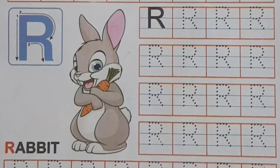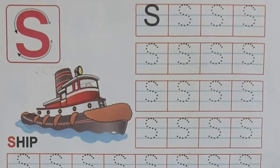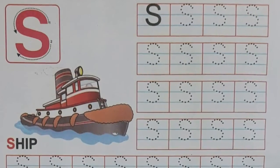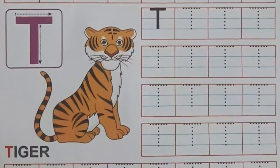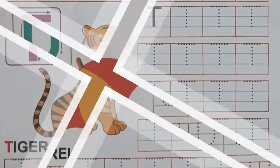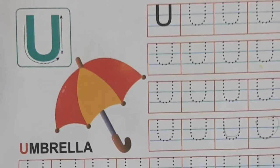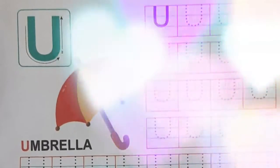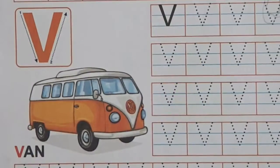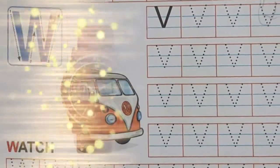R for Rabbit, S for Sheep, T for Tiger, U for Umbrella, V for Van.